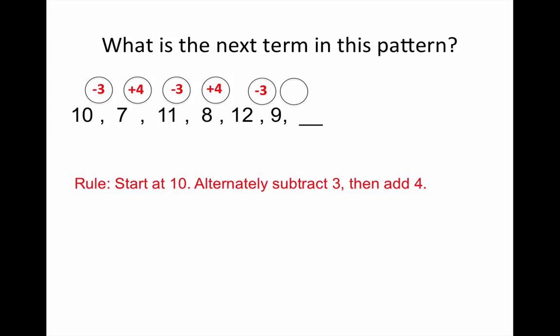So the pattern rule is to start at 10 and alternately subtract 3, then add 4. When you alternate between things, you go back and forth between them. This is going to be a key word for repeating patterns. Now we can continue to find the next term in this pattern. The last step we did was minus 3, so this time we're going to need to add 4 to get 13.